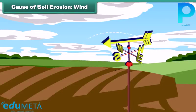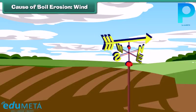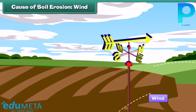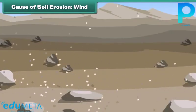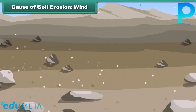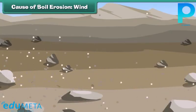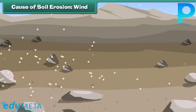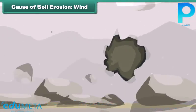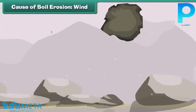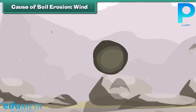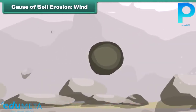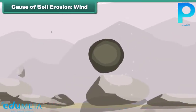The other agent responsible for soil erosion is wind. Wind picks up the finer soil particles and takes them to other locations. During storms, heavy wind takes away the bigger soil particles to distant places, causing soil erosion.